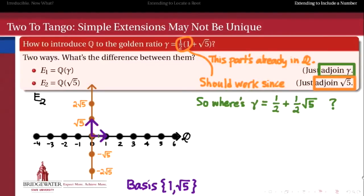Does it belong? Well, sure it does. Right here at the point 1 half comma 1 half, we get 1 half times 1 plus 1 half times radical 5, and that's exactly gamma. So gamma does live inside of E2.